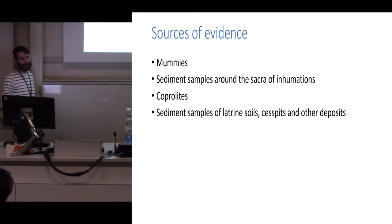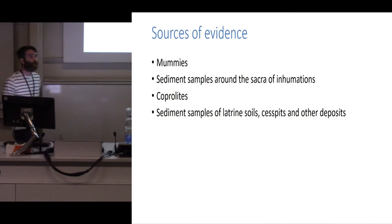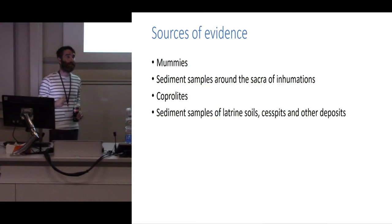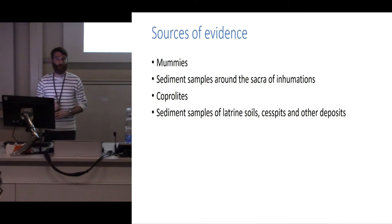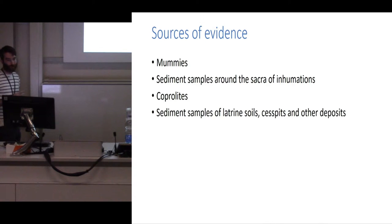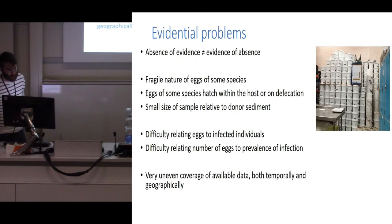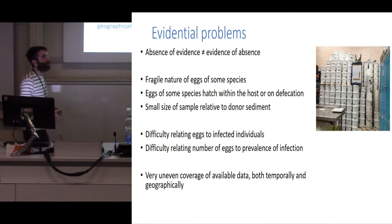Thirdly, coprolites. There was a lot of work in York looking at coprolites through the 80s and 90s. The vast majority of coprolites — preserved turds — found on archaeological sites are actually dog coprolites, identified as such because they contain lots of small splinters of broken bone. But there are some human coprolites, most famously the Lloyd's Bank turd, which I believe you can still go and visit in York today. Finally, sediment samples from latrines, cesspits, and other deposits that look a bit iffy — which is the realm in which I'm working.